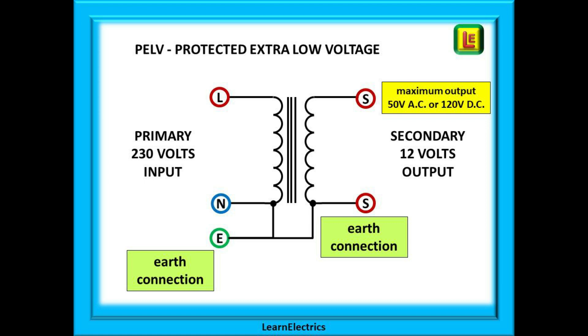But here is the big difference between the two types. With the PELV transformer the secondary side is also earthed. Both primary and secondary windings are earthed to the same point. This is why it is called protected extra low voltage. There is a protective earth on both windings, protected.